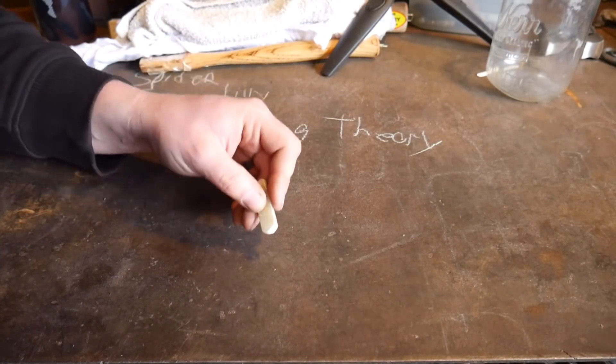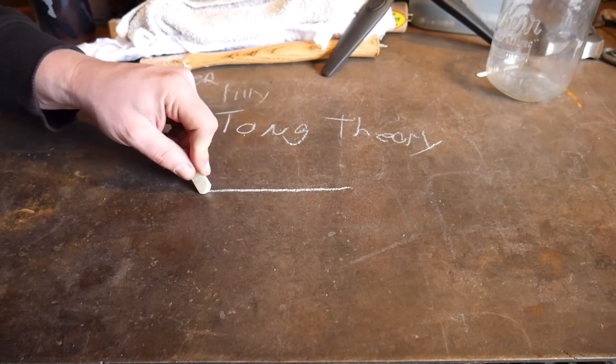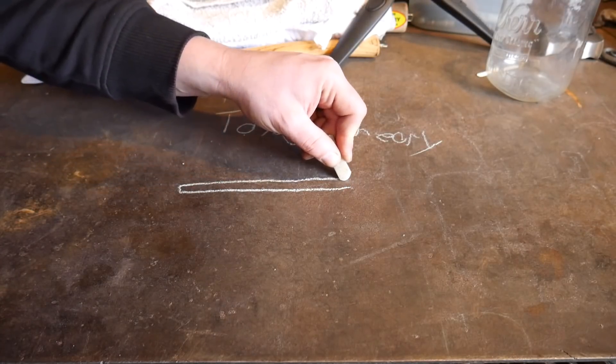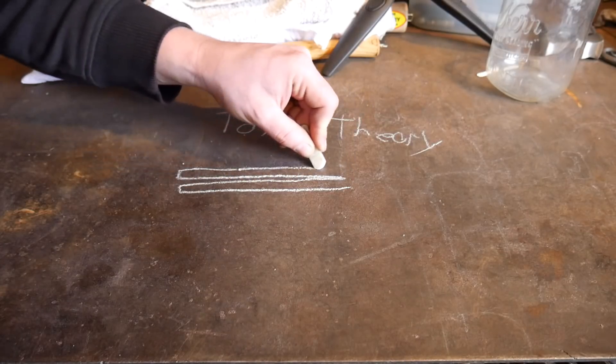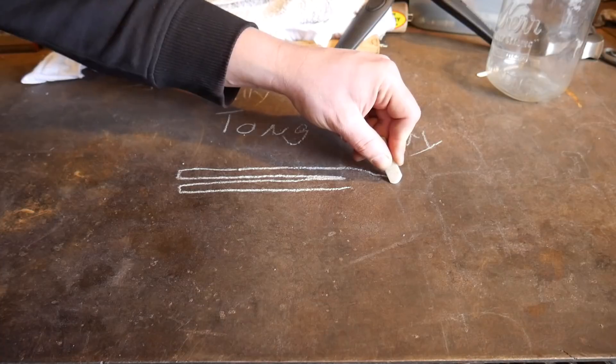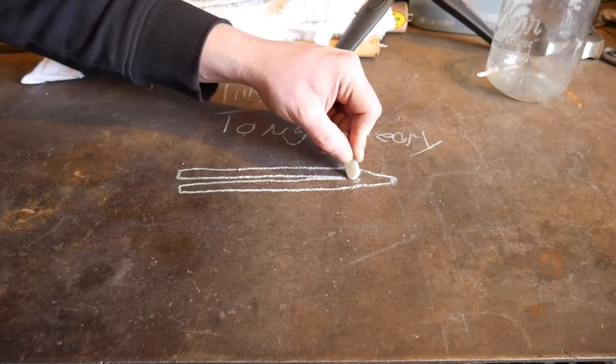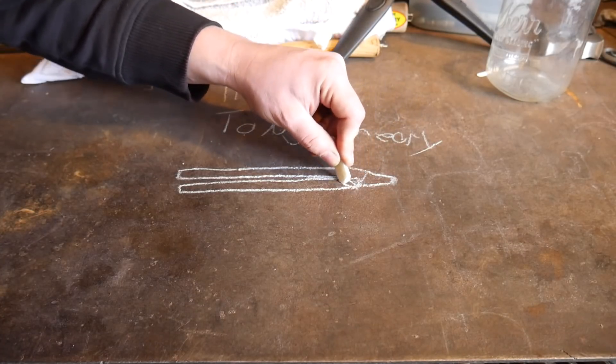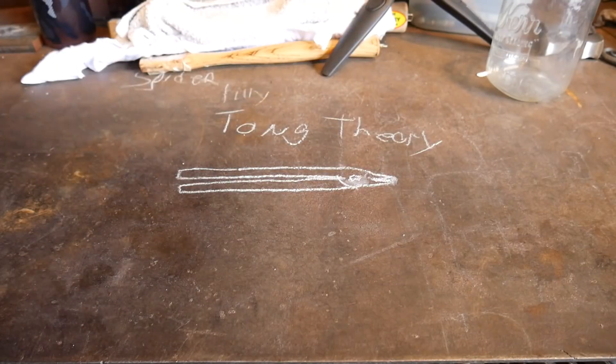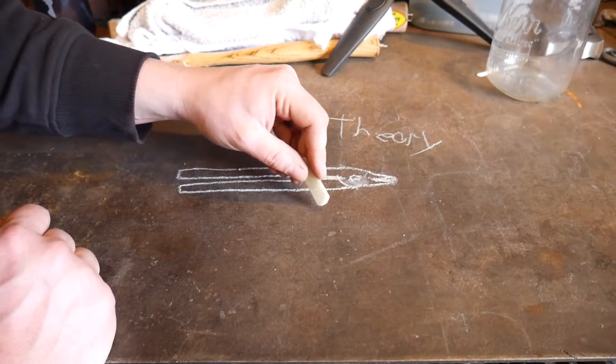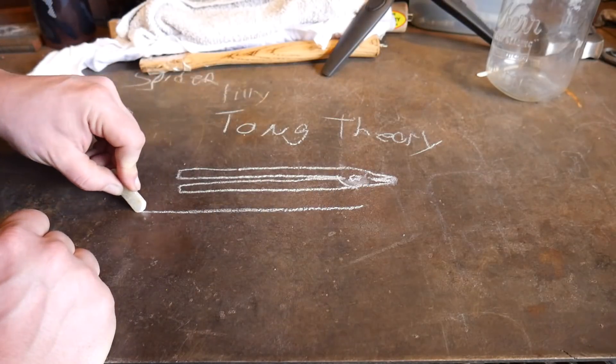So I'm going to try to draw a couple pairs of tongs here. You just have to bear with me. I'm just going to draw all of them. They'll be rough sketches, but you guys can kind of get the idea, right? Here's one pair of tongs.